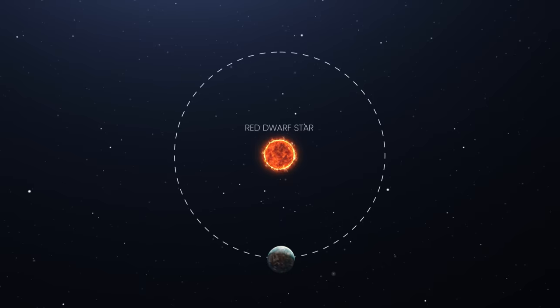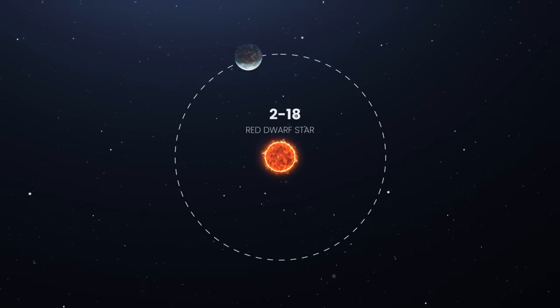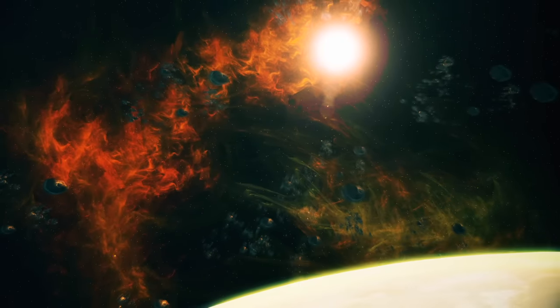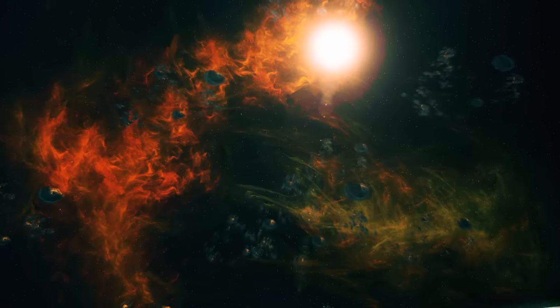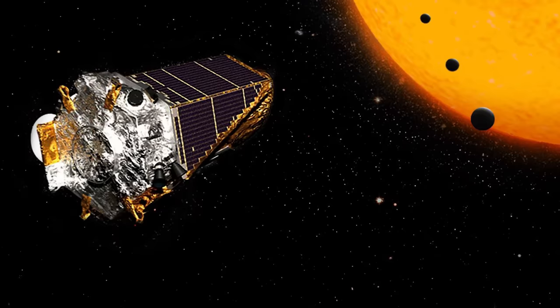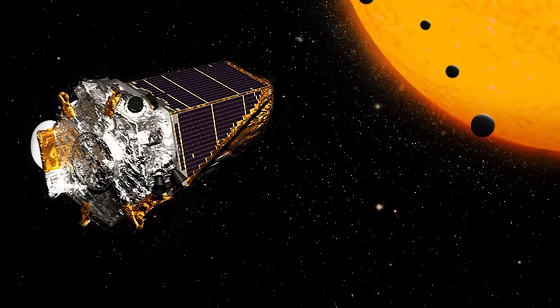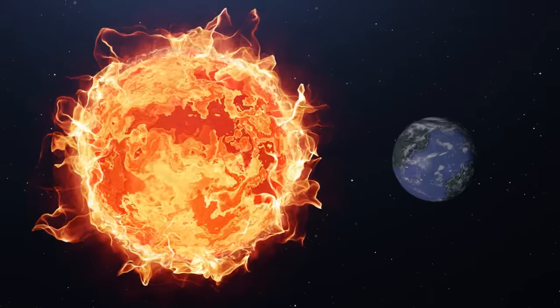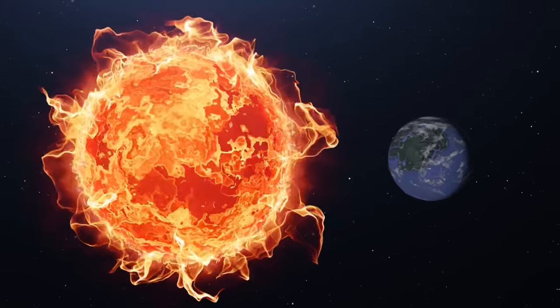It orbits a main-sequence red dwarf star called K2-18. A red dwarf star is the smallest, coolest star, and by far the most common type of star in the Milky Way. According to Kepler's data, astronomers estimate that 6% of red dwarf stars have an Earth-sized planet in the Goldilocks zone, at least in our neighborhood.